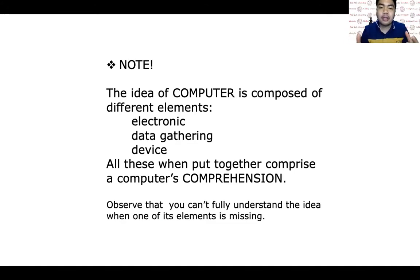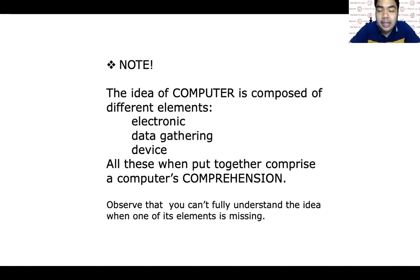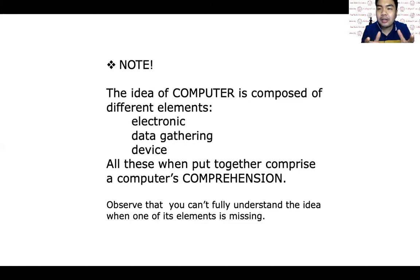When all these elements are put together, they comprise a computer's comprehension. Note that you cannot fully understand the idea when one of its elements is missing. For example, when you remove the word 'electronic' from the description of a computer, it becomes just a data gathering device. So if you lessen the comprehension of the word 'computer' by removing 'electronic,' you will come to know many different data gathering devices.